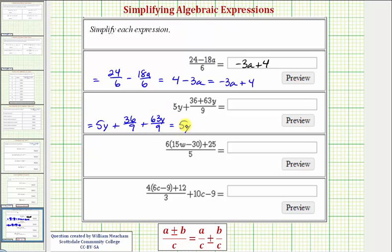We have 5y, 36 divided by 9 equals 4, so we have plus 4. 63y divided by 9 is equal to 7y, so we have plus 7y. Notice how we have like terms. We have two y terms here and here. 5y plus 7y is equal to 12y. So this simplifies to 12y plus 4.